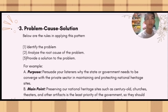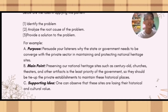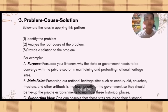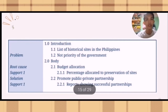For the problem-cause-solution pattern, first identify the problem, second analyze the root cause of the problem, and third provide the solution. Its purpose is to persuade your listeners why the state or government needs to converge with the private sector in maintaining and protecting national heritage sites. Its main point is that preserving national heritage sites such as century-old churches, theaters, and other artifacts is the least priority of the government, so this should be tied up with private establishments to maintain these historical places. Its supporting idea is that one can observe these sites are losing their historical and cultural value. The format has problem, root cause, support one, solution, and support.